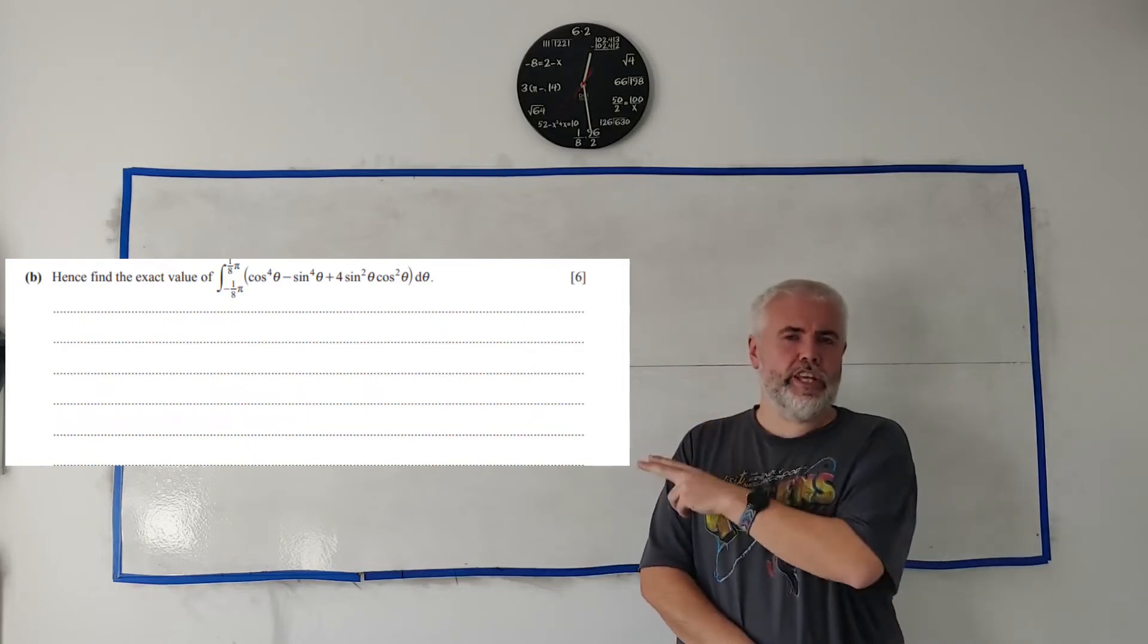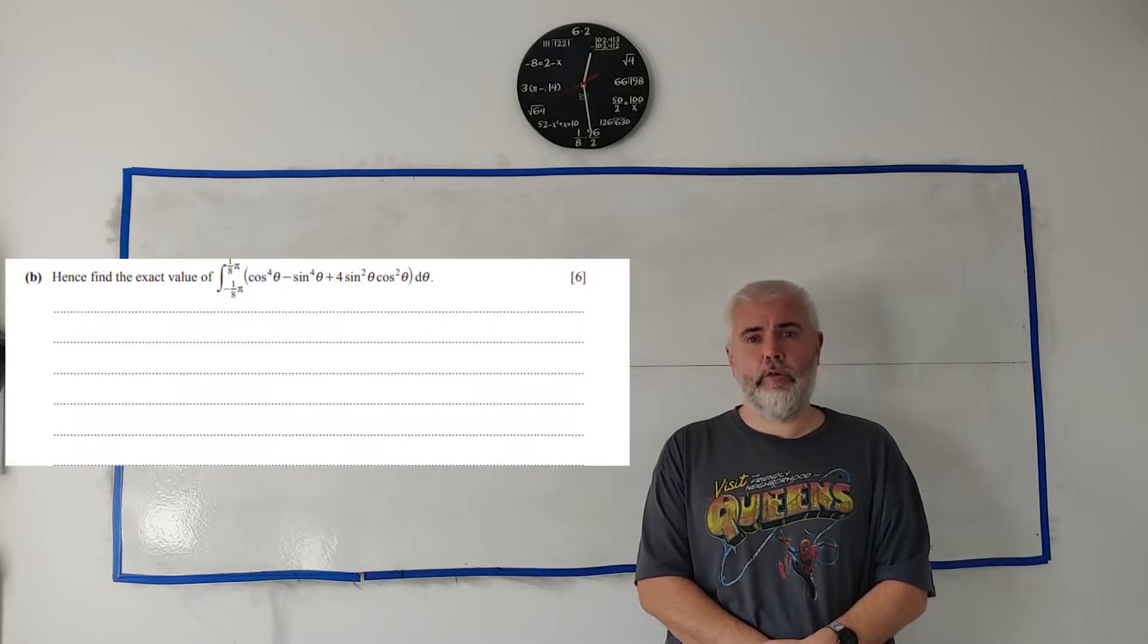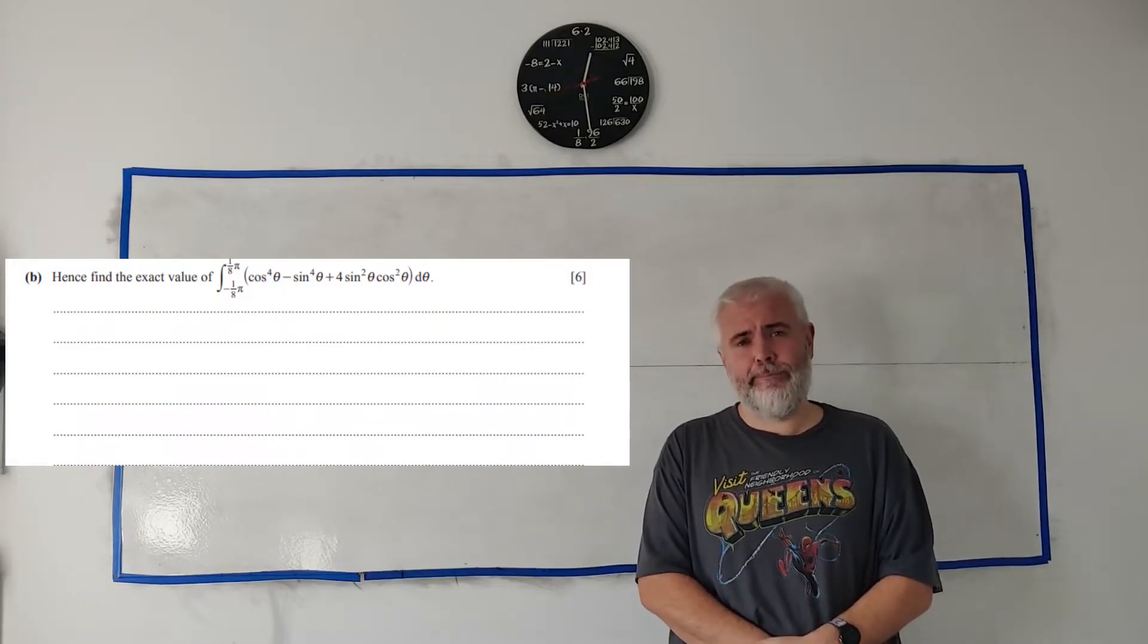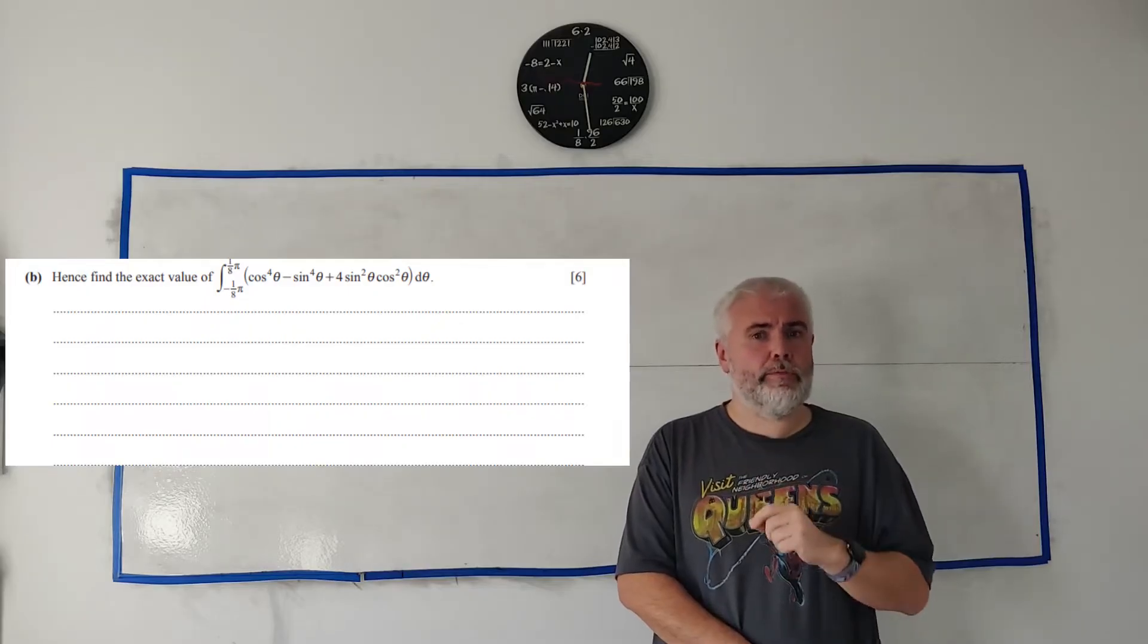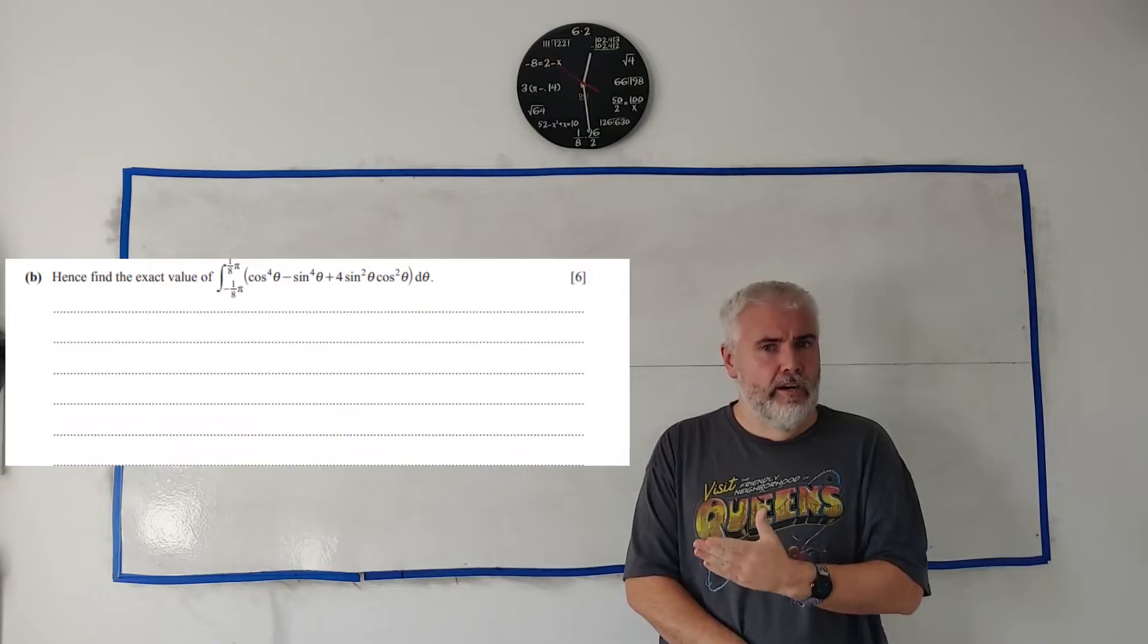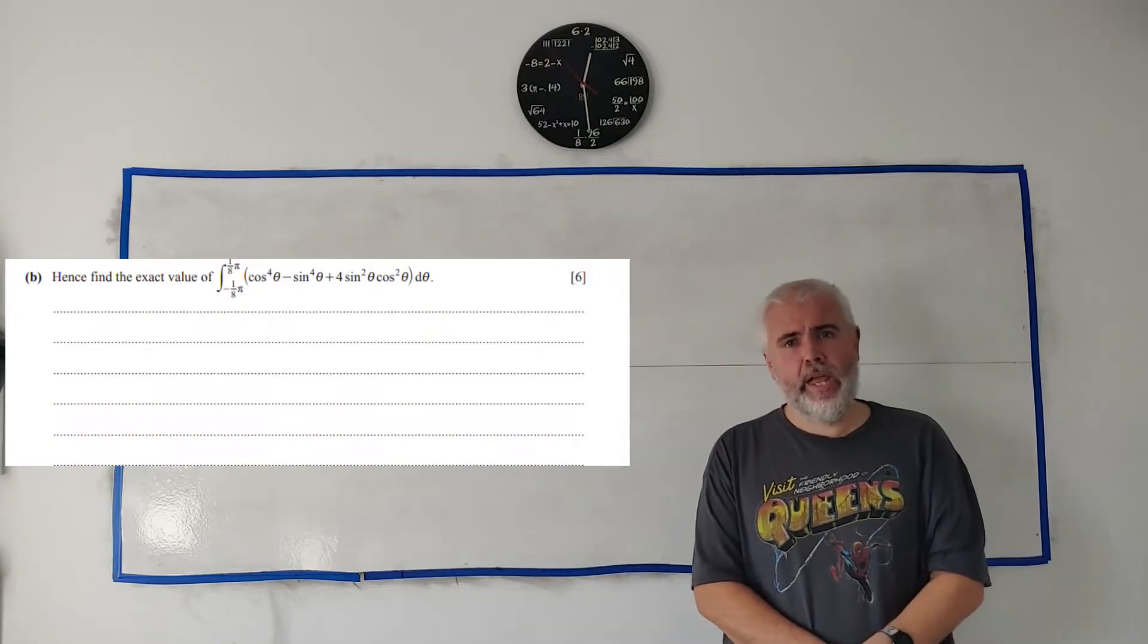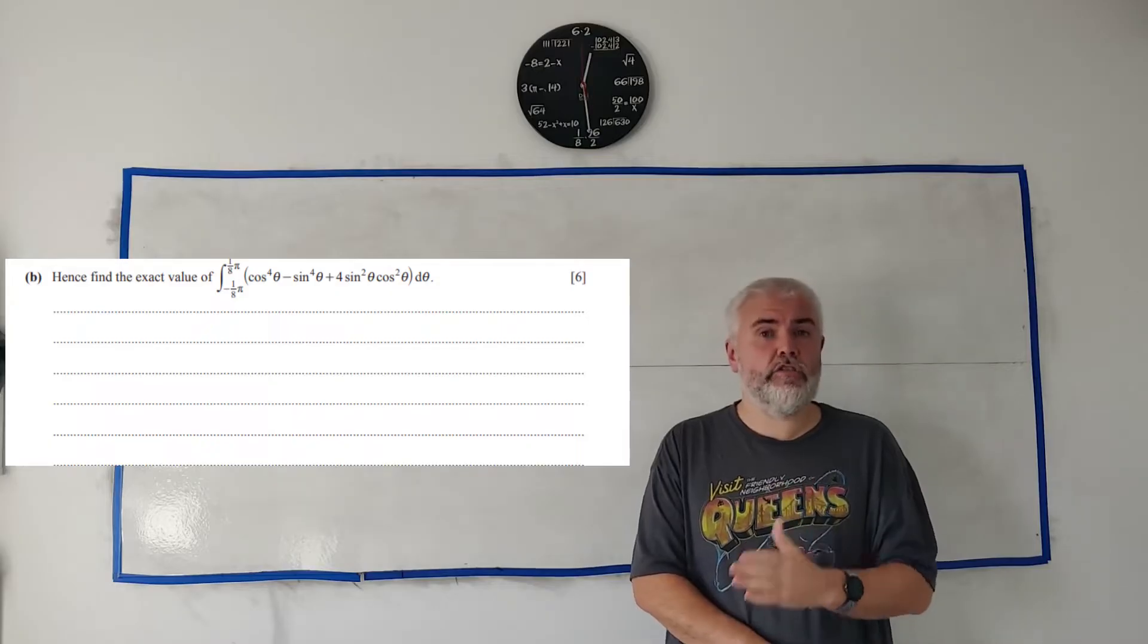In this video, I'll be working through the question you see on the screen from paper 3.2 from 2024 of the Cambridge A-Level exam. If you're looking for a different question from this paper, check out the description below for a link to a playlist. And if you're looking for a different paper entirely, have a look around on my channel. I'll be doing all this on a whiteboard, hopefully just like you're used to your teacher doing.